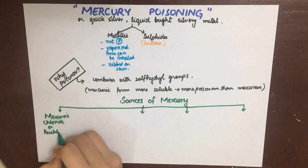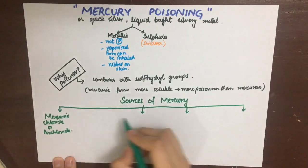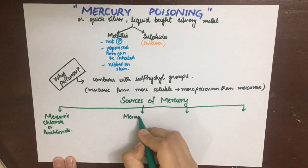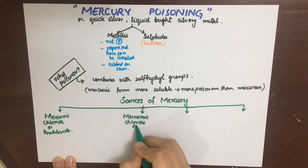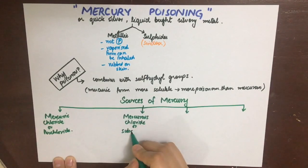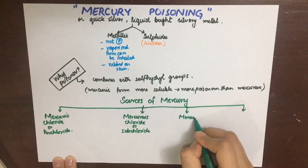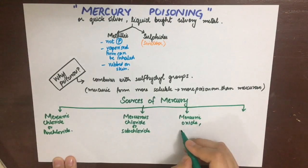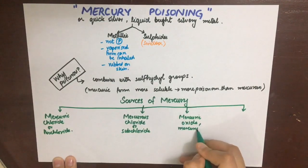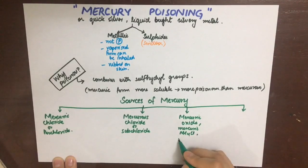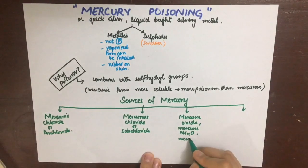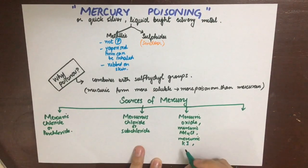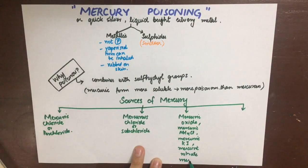The sources of mercury include: mercuric chloride or perchloride, mercurous chloride or sub-chloride, and other compounds such as mercuric oxide, mercuric ammonium chloride, mercuric potassium iodide, mercuric nitrate, mercuric cyanide, and organic mercury compounds.